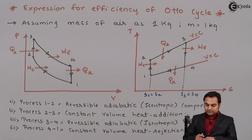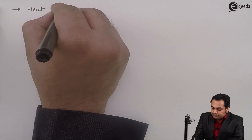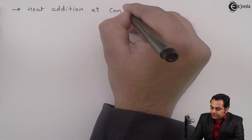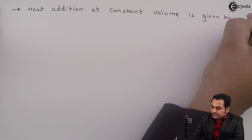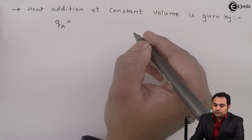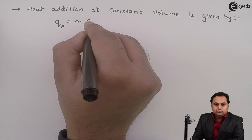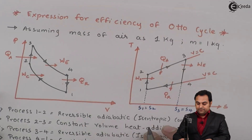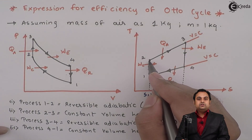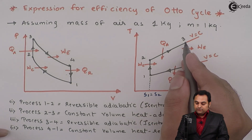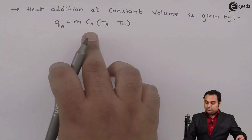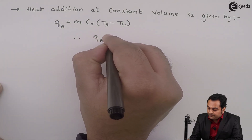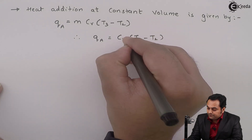Now I will start with the expression for efficiency of Otto cycle. First, the heat addition process, that is 2 to 3. Heat addition at constant volume is given by QA = m·Cv·(T3 − T2). Since we have assumed mass as 1 kg, m = 1, so QA = Cv·(T3 − T2), and its unit is kJ/kg.